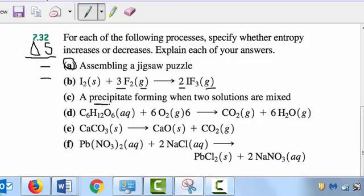For part C, a solid forms from two solutions. Solutions are more disordered than a solid, so entropy decreases during this process, and the sign of delta S is consequently negative.